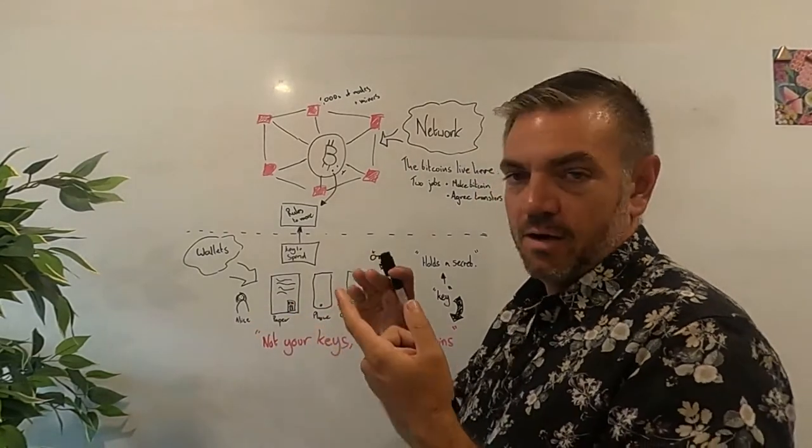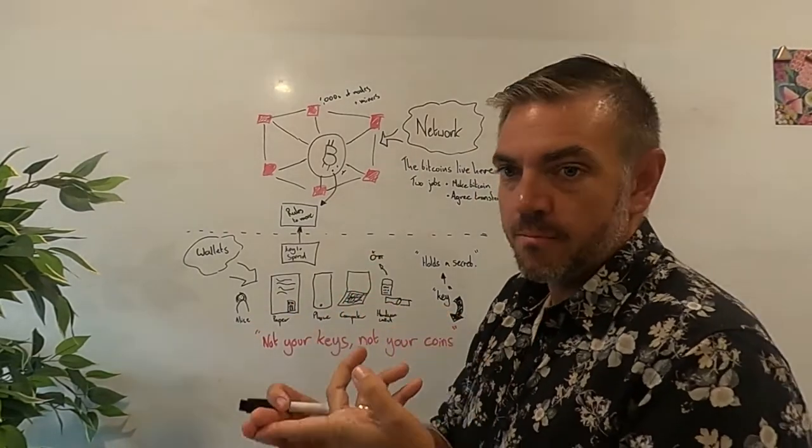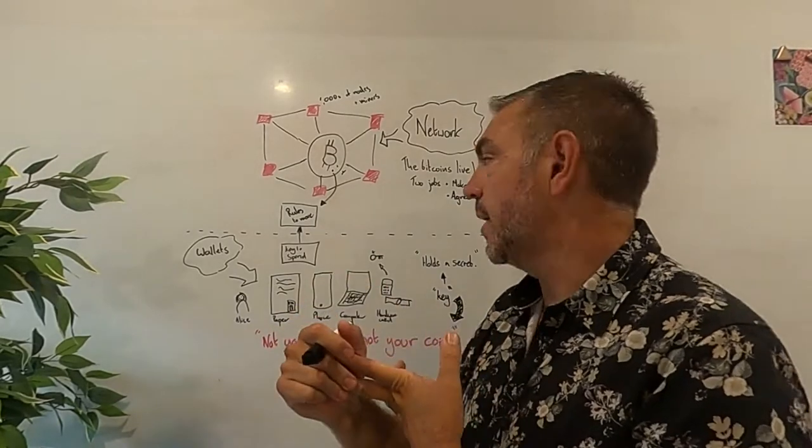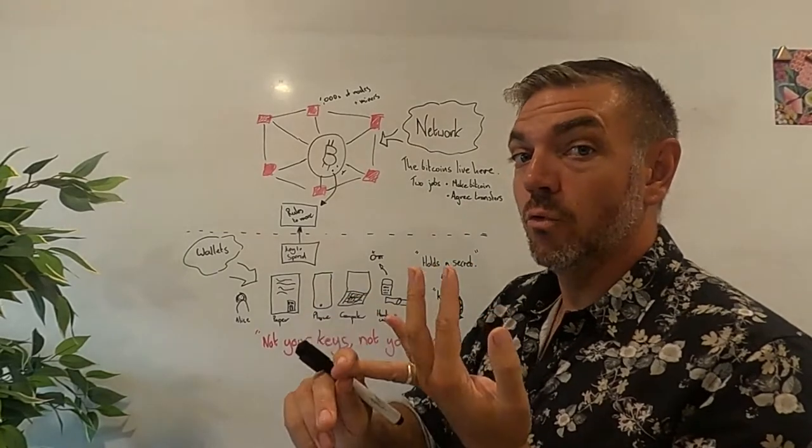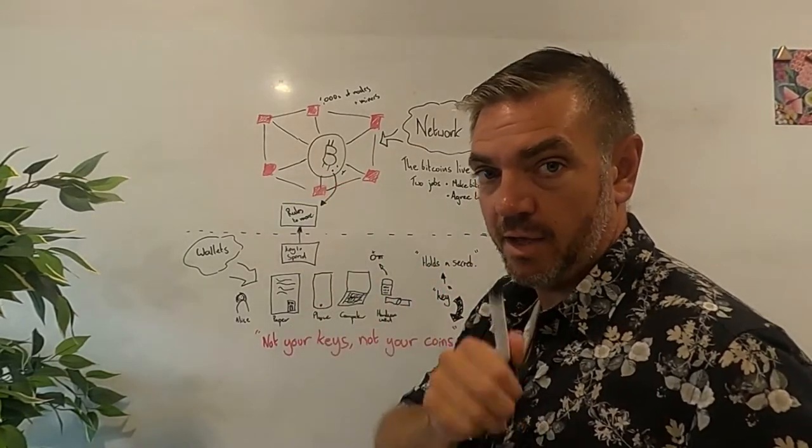Rules like there can only be 21 million Bitcoins. There's a certain schedule on which new Bitcoins are made. And they can only be transferred when they follow the rules that are encumbered on a Bitcoin. We'll get to that in a moment.